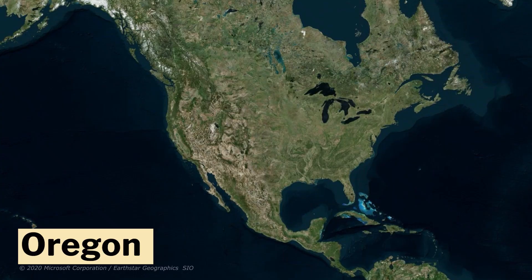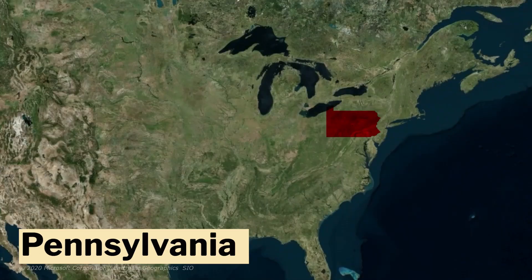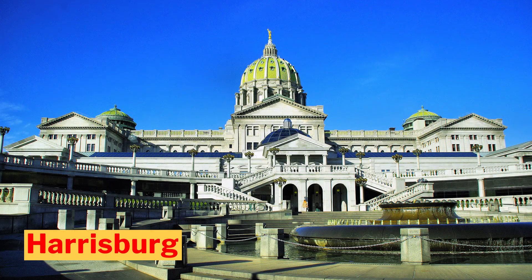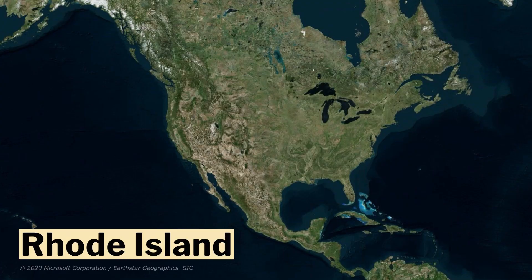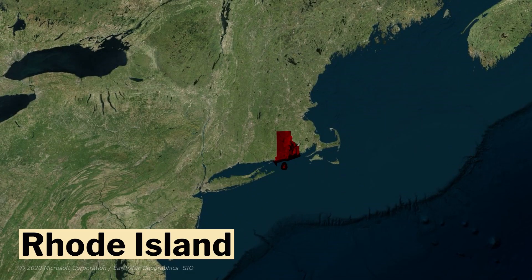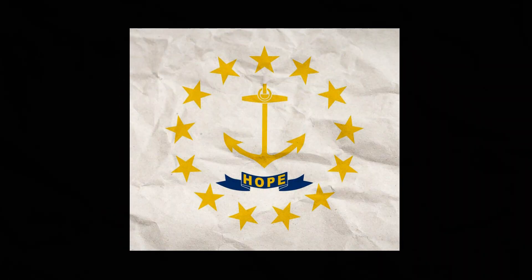Number 37, Oregon. Its capital is Salem. This is the flag of Oregon. Number 38, Pennsylvania. Its capital is Harrisburg. This is the flag of Pennsylvania. Number 39, Rhode Island. Its capital is Providence. This is the flag of Rhode Island.